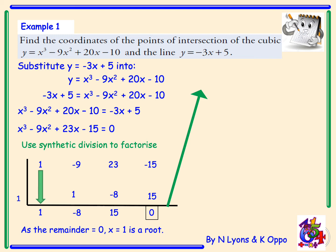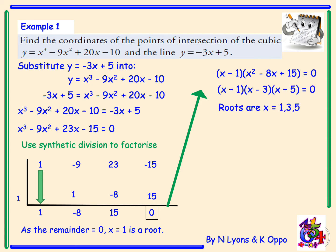Now if x equals 1 is a root, the factor that goes with that is x minus 1, and our quotient is x-squared minus 8x plus 15. We equate this to zero and factorise our quadratic to get (x minus 3)(x minus 5). Therefore the roots are x equals 1, 3, and 5.